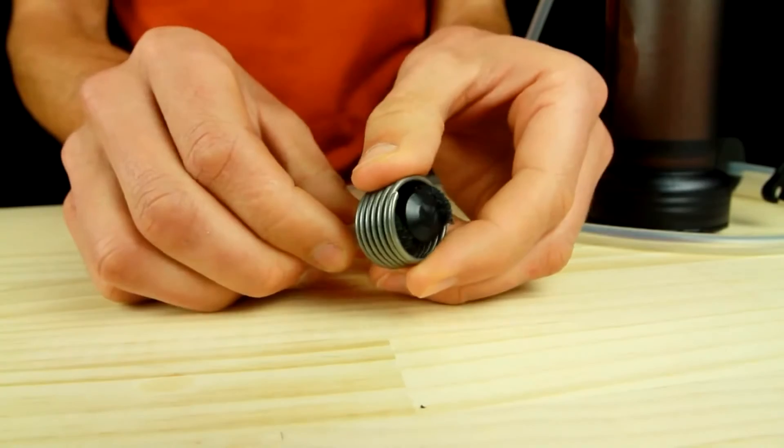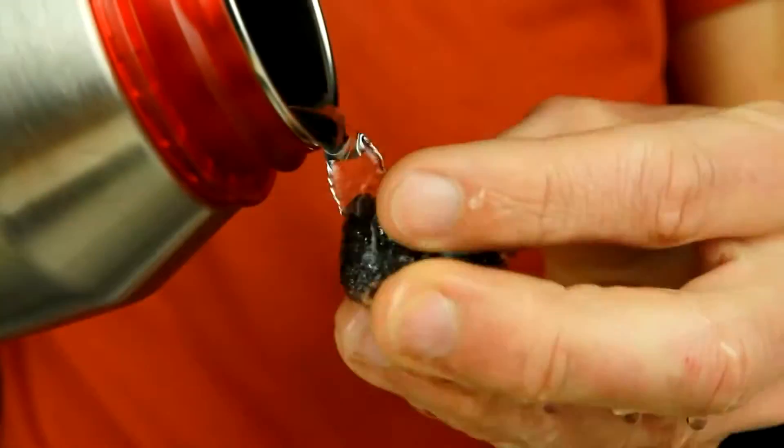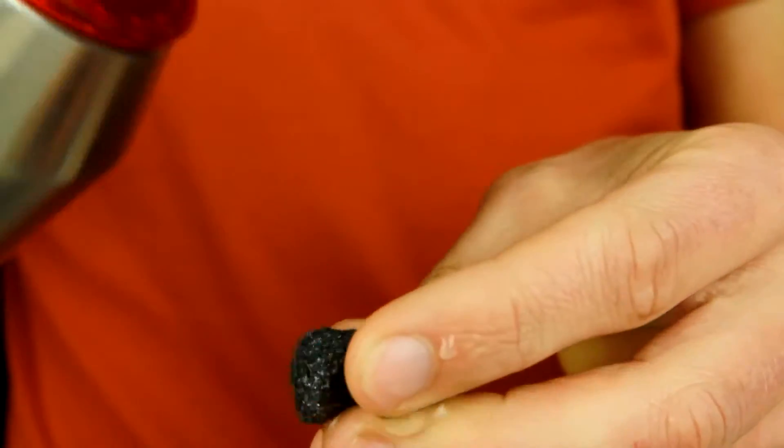To clean the inlet foam, slide the inlet cage up the hose and remove the foam from the side of the inlet funnel. Rinse the foam and reinstall it into the inlet funnel.